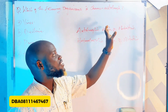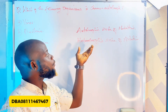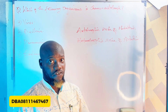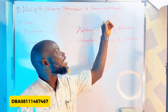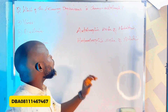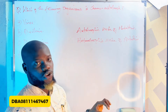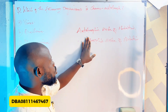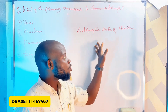Autotrophic mode of nutrition is the mode whereby organisms manufacture their own food. Heterotrophic mode of nutrition is the mode whereby organisms cannot manufacture their food — they depend on autotrophs for their food. As far as this question is concerned, our business is with autotrophic mode of nutrition, not heterotrophic.